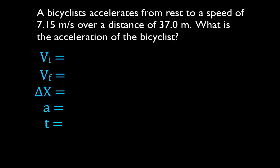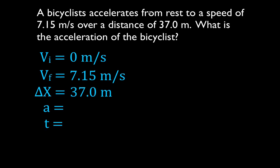Fill in what you know and what you don't know. We know the bicyclist accelerates from rest, so the initial velocity is zero meters per second. The final velocity is 7.15, and the distance over which that occurs is 37 meters — that is the change in position. We are trying to solve for the acceleration, so I'll put a question mark there. We're not given the time and we're not going to try to solve for the time. We are given three variables and we're trying to solve for the fourth.